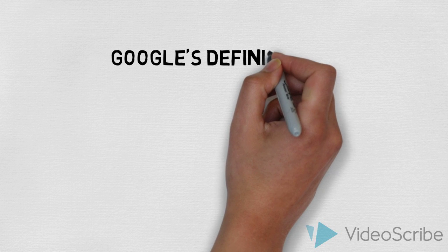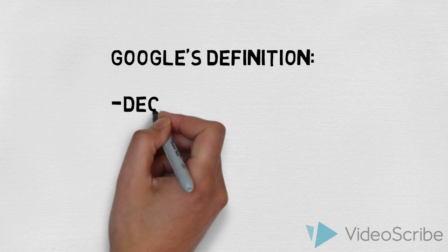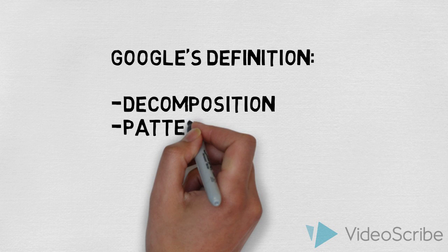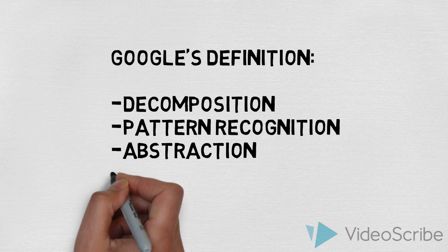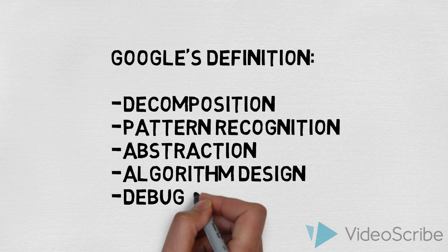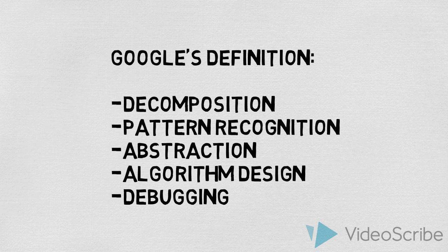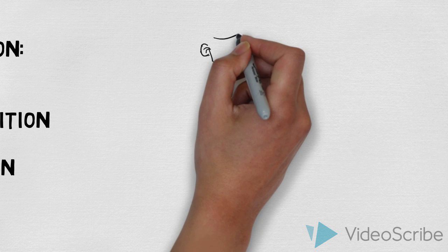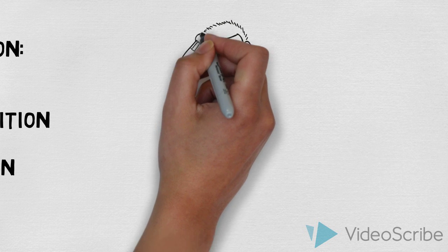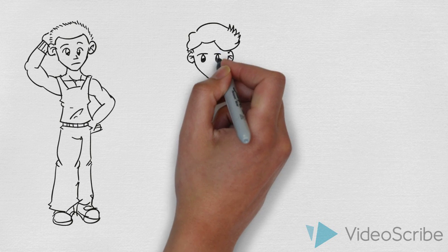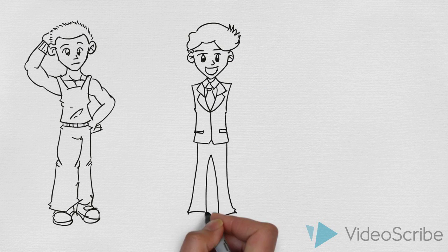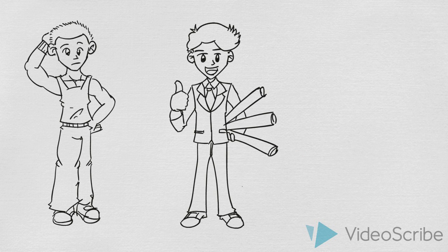Brennan and Resnick explain that this is not much of a simple term. Google's definition comprises four elements: decomposition, pattern recognition, abstraction, and algorithm design and debugging. Teachers could argue that these terms are too complicated to be used in primary school. However, development of vocabulary is essential in all subject areas, and as Barry highlights, phrases like 'split vowel digraph' are used in reception — so why would words such as 'algorithm' pose a problem?